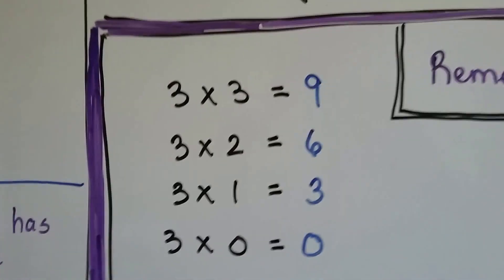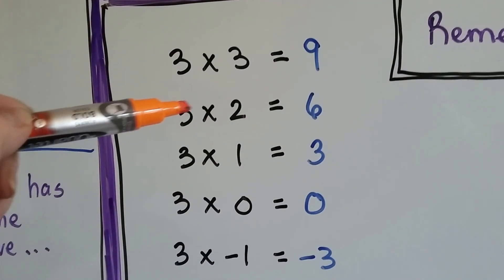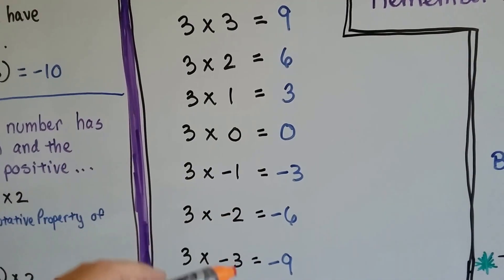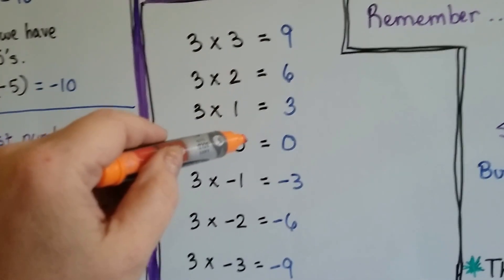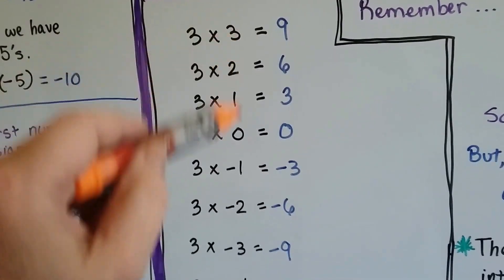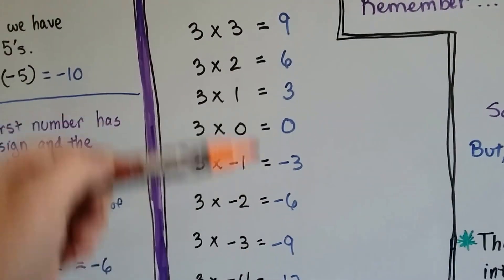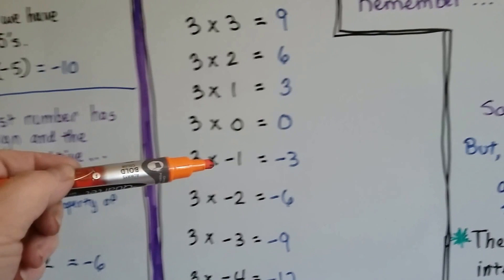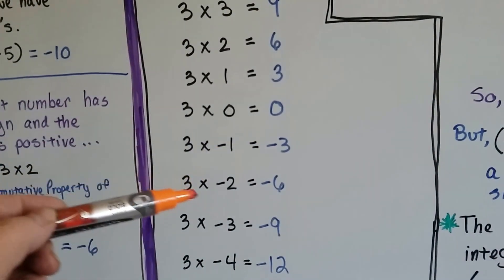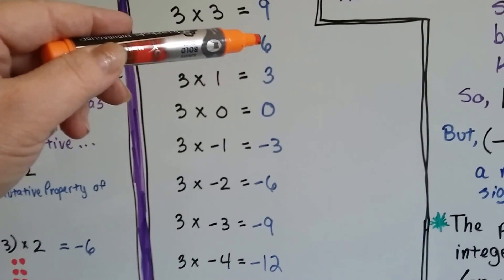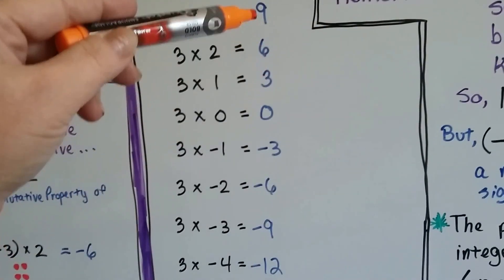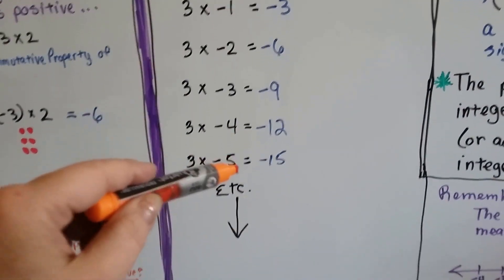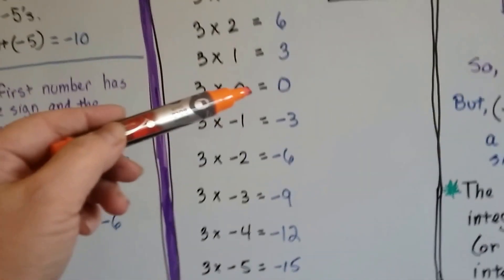Now I want you to look at this. We know that 3 times 3 is 9, 3 times 2 is 6, 3 times 1 is 3, and 3 times 0 is 0. But look what happens when we keep going down below the number line. On a number line, we have 0 in the middle, then 1, 2, 3 for positive numbers, and negative 1, negative 2, negative 3 going the other way. So doing this with our 3s multiplication table: 3 times negative 1 is negative 3, 3 times negative 2 is negative 6. It's a mirror image of the numbers on the other side of the 0. 3 times negative 4 is negative 12, 3 times negative 5 is negative 15, and it just keeps going, just like the 3 times table on the other side of 0.